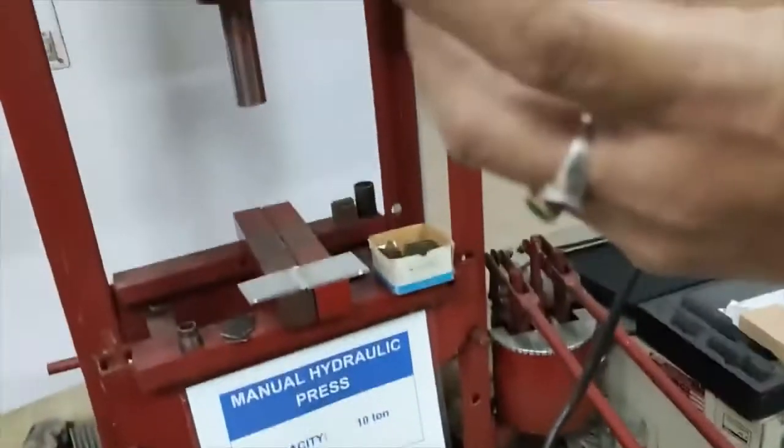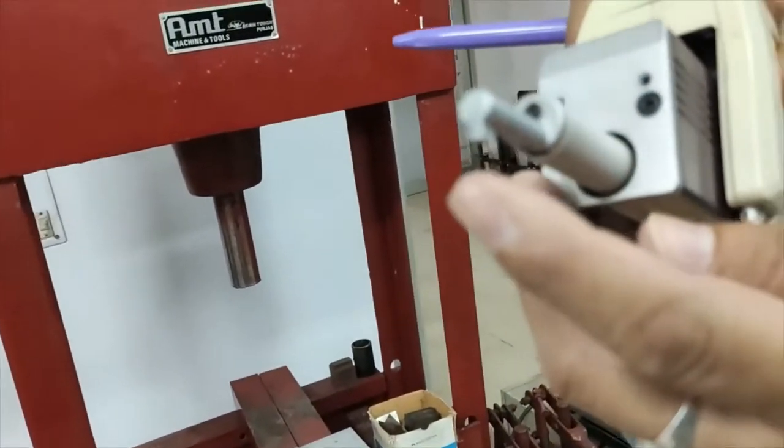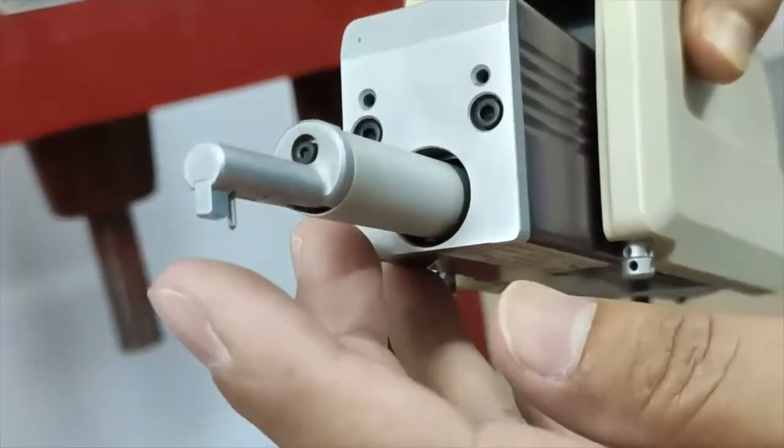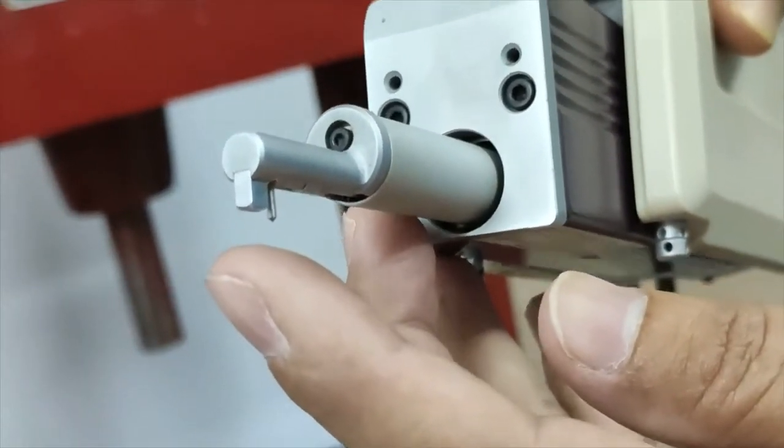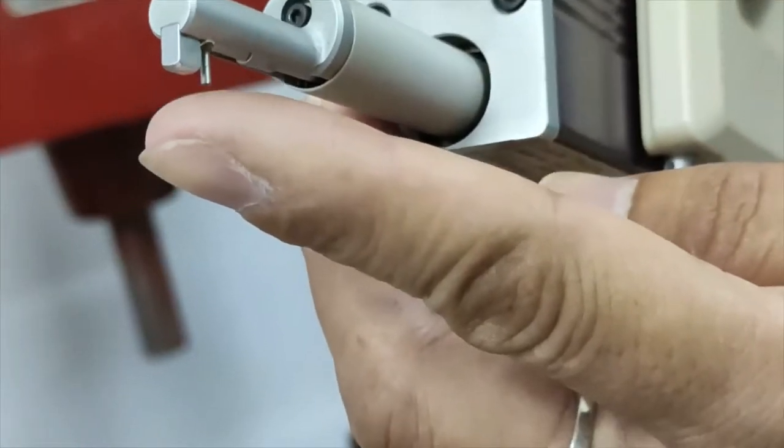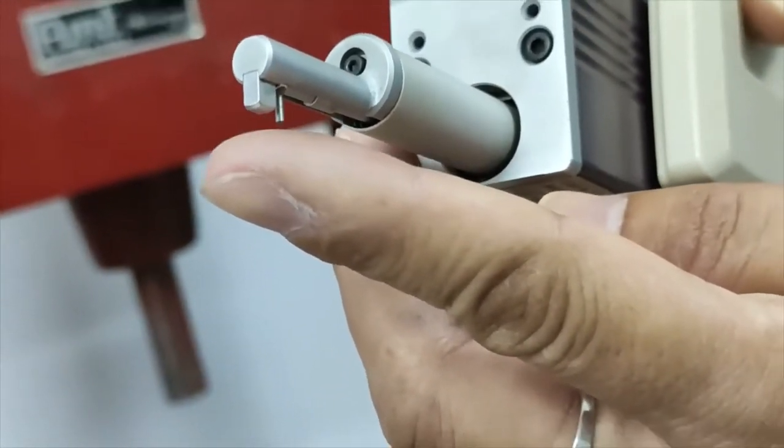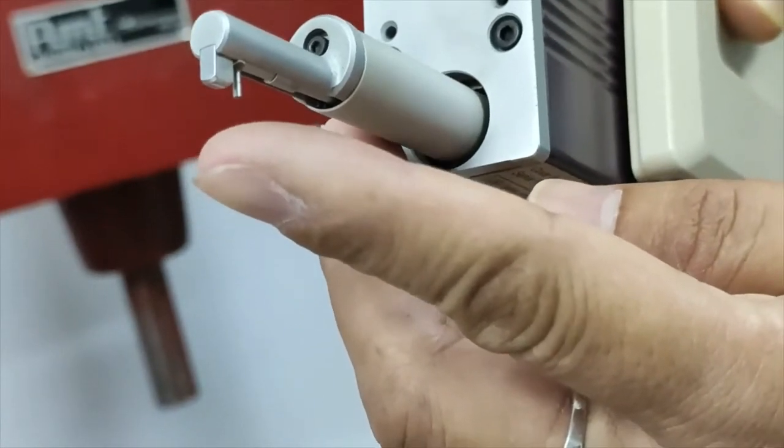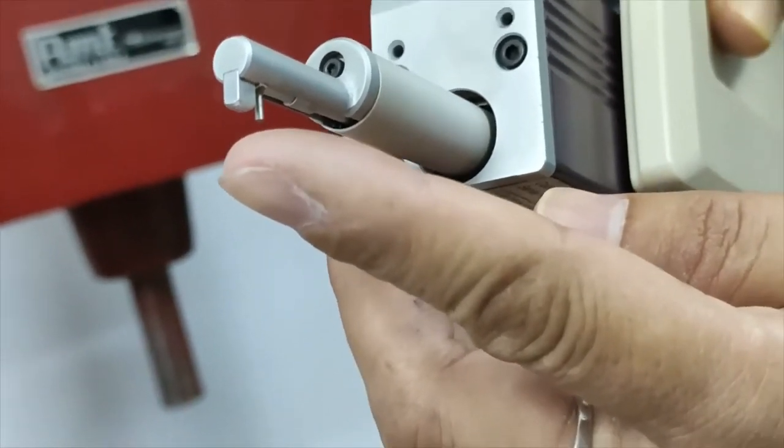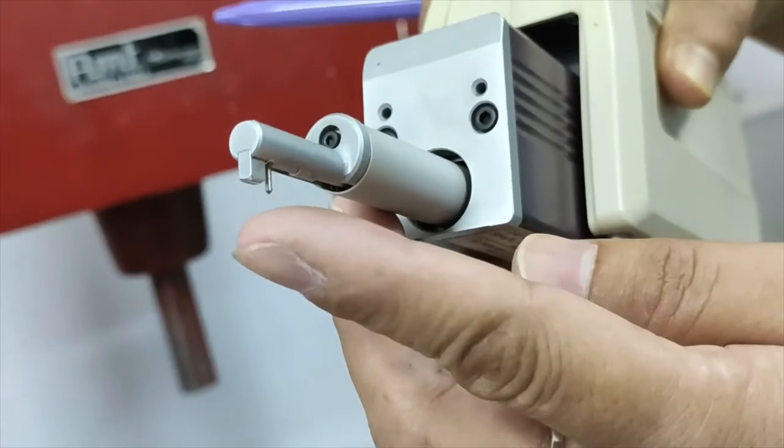Actually in principle, the stylus with diamond tip, when you keep it on the surface of the machined surface, this stylus will travel 4 mm. I am setting here 4 mm. This will travel like this 4 mm, and along with the surface it will vibrate. This vibration is converted to the roughness quality or roughness value.